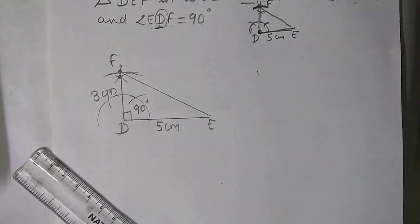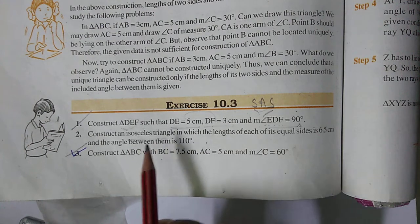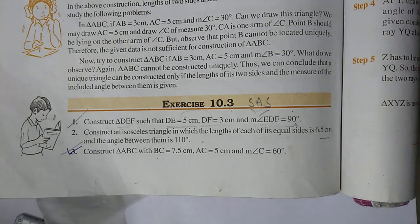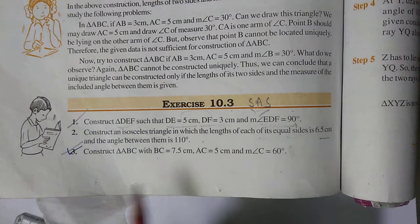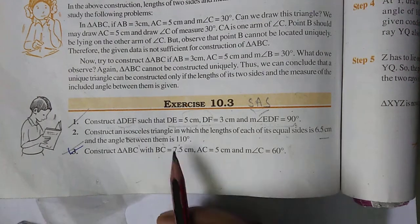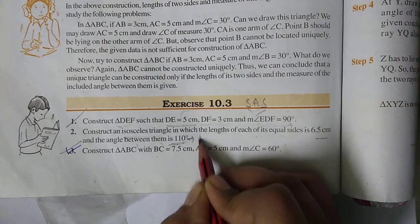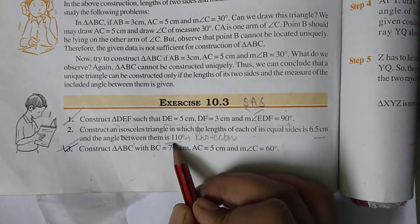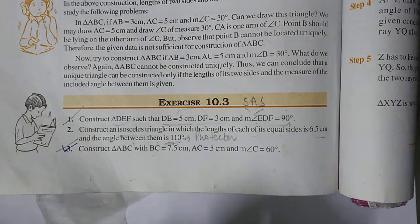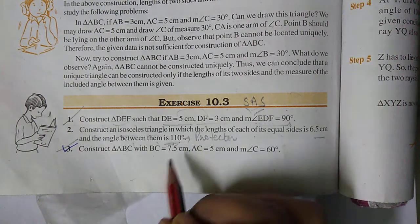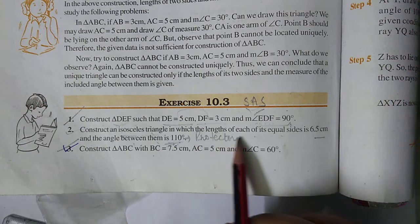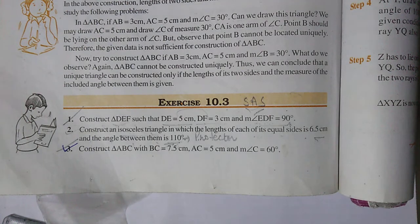Write the steps of construction yourself. Now question 2: construct an isosceles triangle where each of the two equal sides is 6.5 cm and the angle between them is 110 degrees. An isosceles triangle has two equal sides. For 110 degrees, since it is not divisible by 15 you cannot construct it with compass — you must use a protractor.